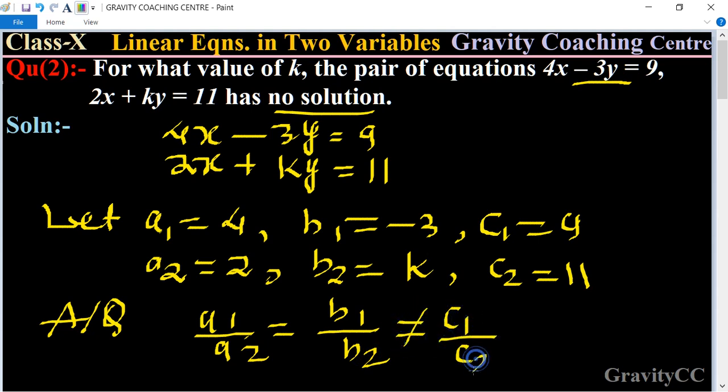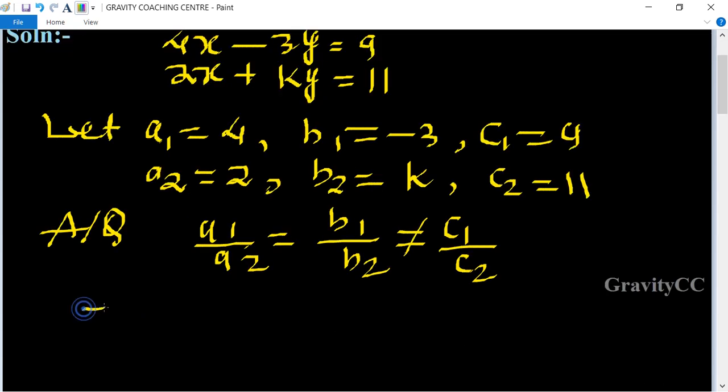So now we put these values: 4 upon 2 equal to minus 3 upon k not equal to 9 upon 11.